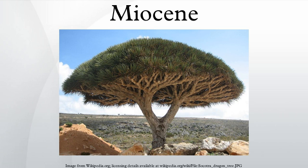Climates remained moderately warm, although the slow global cooling that eventually led to the Pleistocene glaciations continued. Although a long-term cooling trend was well underway, there is evidence of a warm period during the Miocene when the global climate rivalled that of the Oligocene. The Miocene warming began 21 million years ago and continued until 14 million years ago, when global temperatures took a sharp drop — the Middle Miocene climate transition.